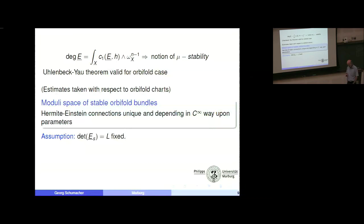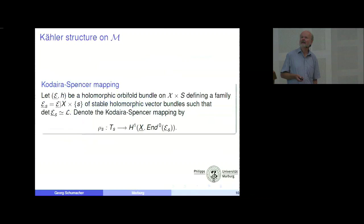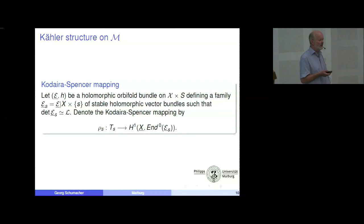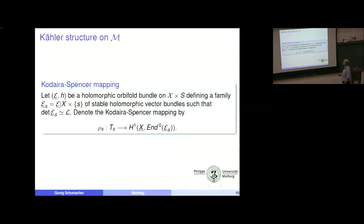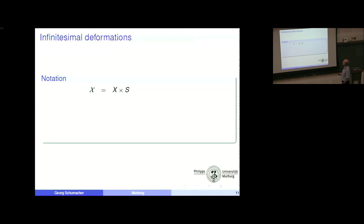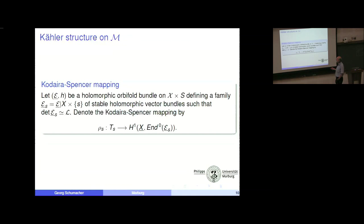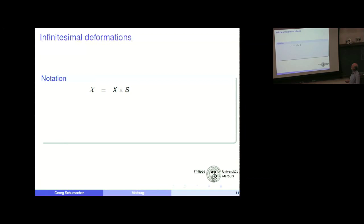Here is now the moduli space. If we want to introduce a Kähler structure on a moduli space, we need to describe the tangent spaces intrinsically, and this is done in terms of the Kodaira-Spencer mapping. We assume we are given a holomorphic orbifold vector bundle on X × S, which defines a family of stable holomorphic vector bundles with fixed determinant bundle. We look at the Kodaira-Spencer map to put a natural L² product on the tangent space, so that we have a Hermitian structure on the moduli space.